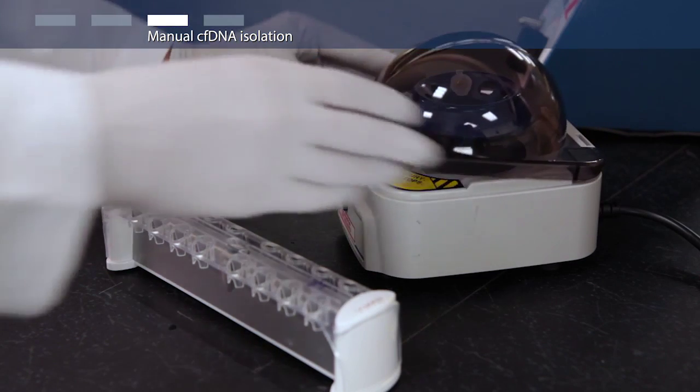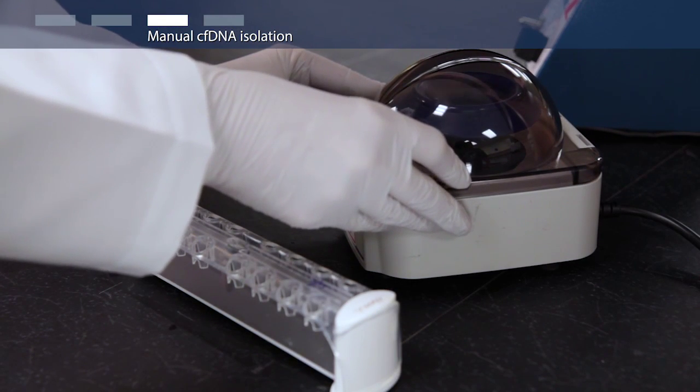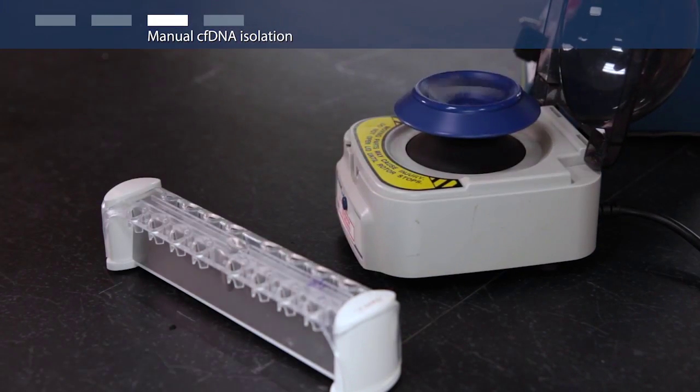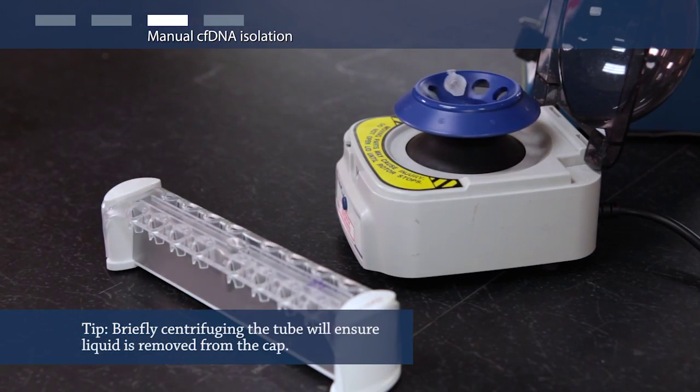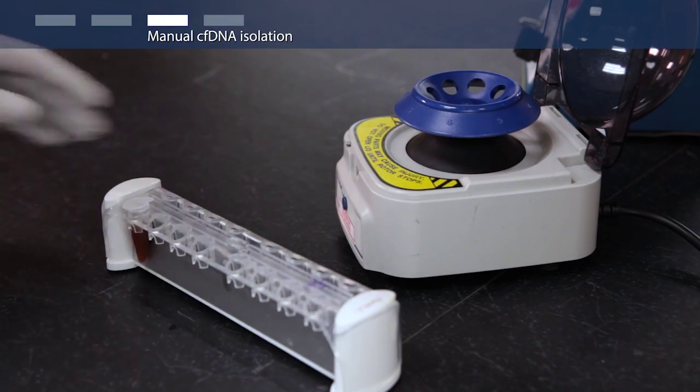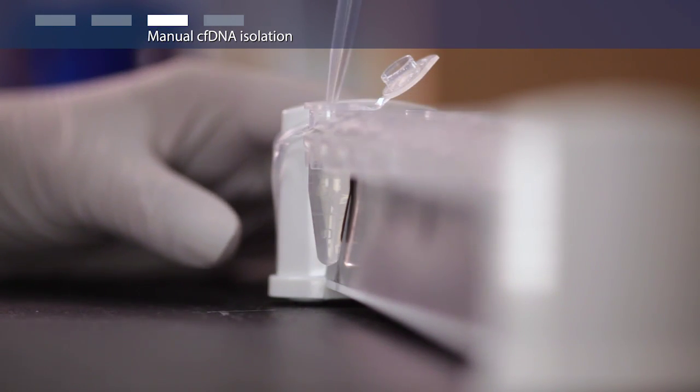Now add 1 ml of wash solution. Vortex for 30 seconds and briefly centrifuge to remove liquid from the cap. Again, place the tube on the DynaMag 2 magnet for 1-2 minutes and remove supernatant.